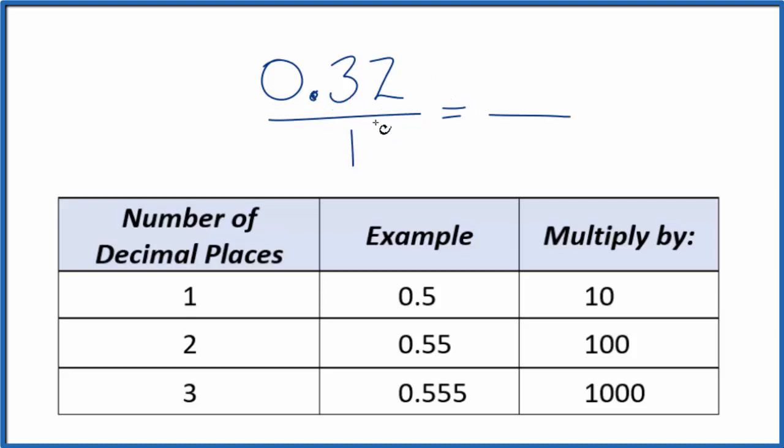We have 1, 2 decimal places. When we have 2 decimal places, we're going to multiply the top and the bottom by 100, like this.